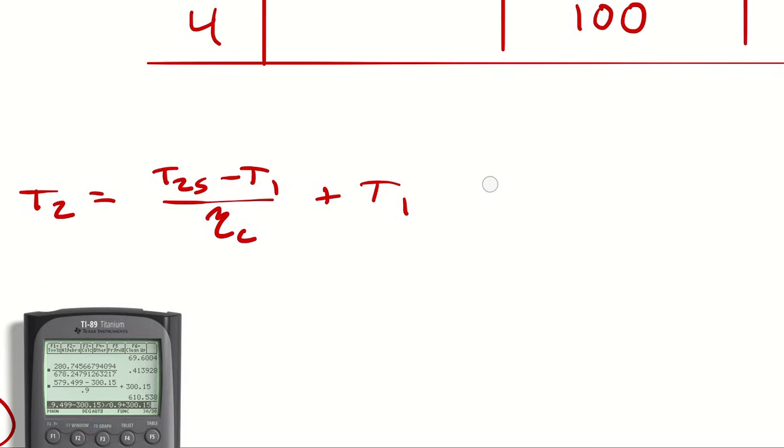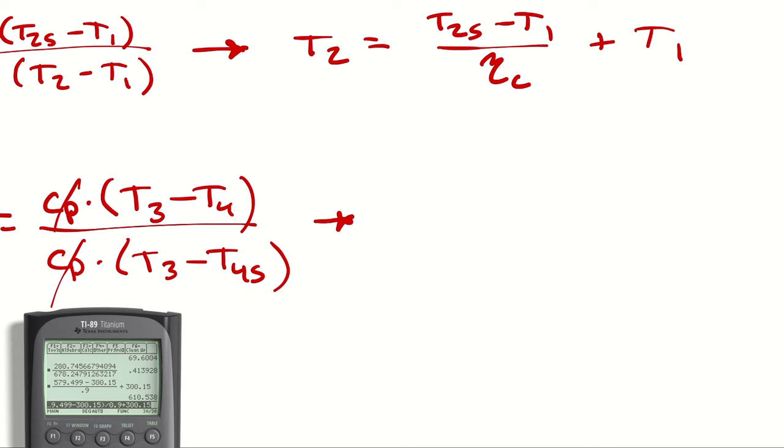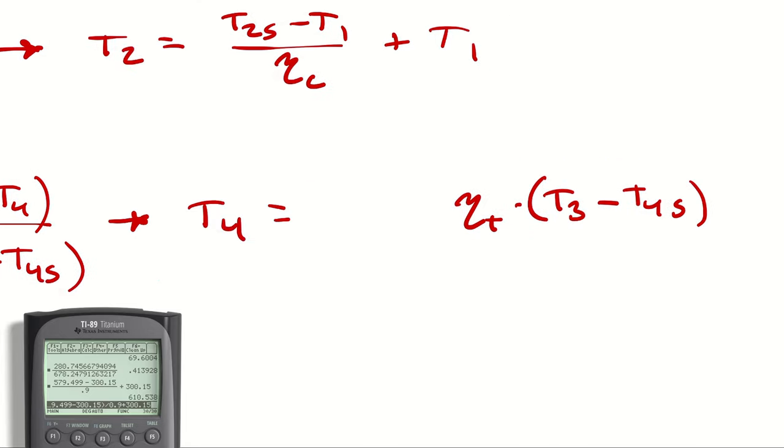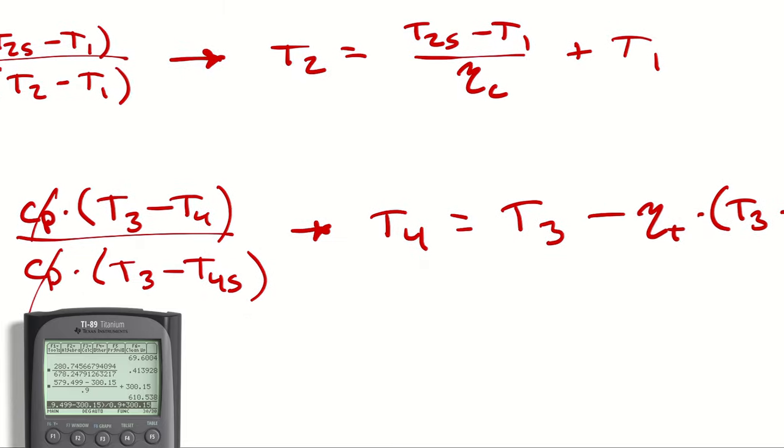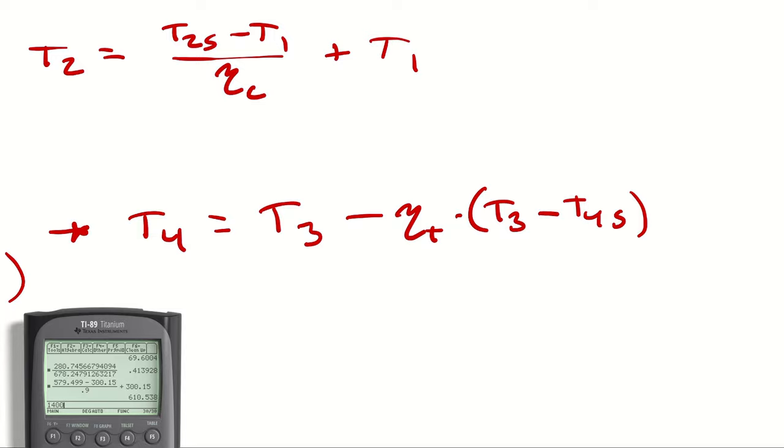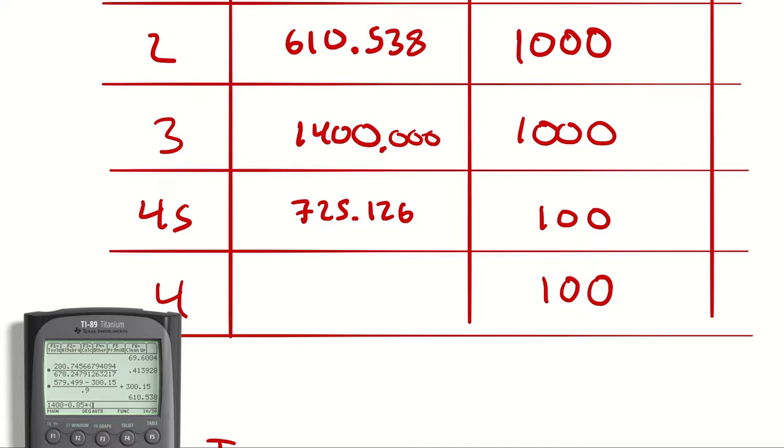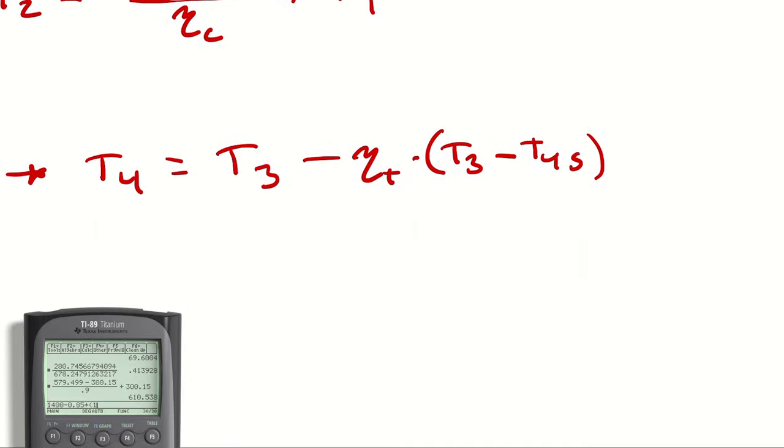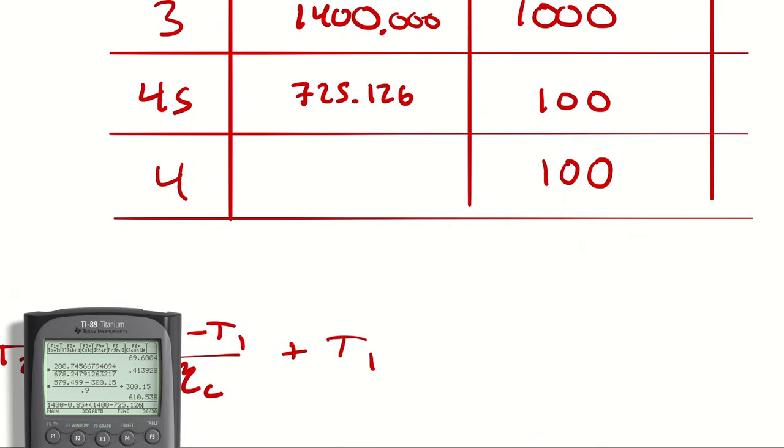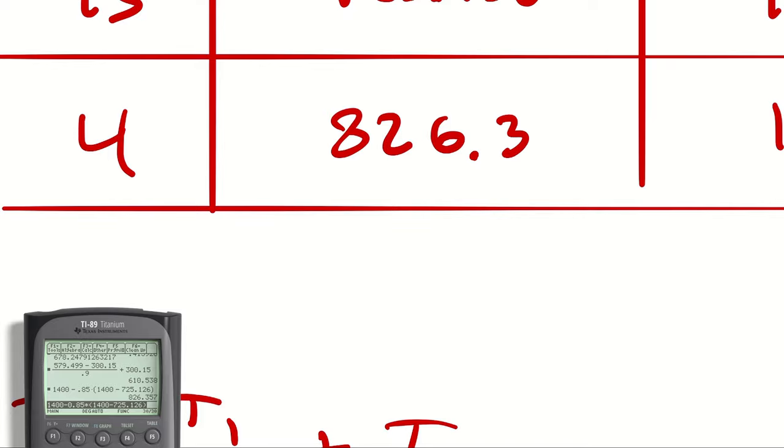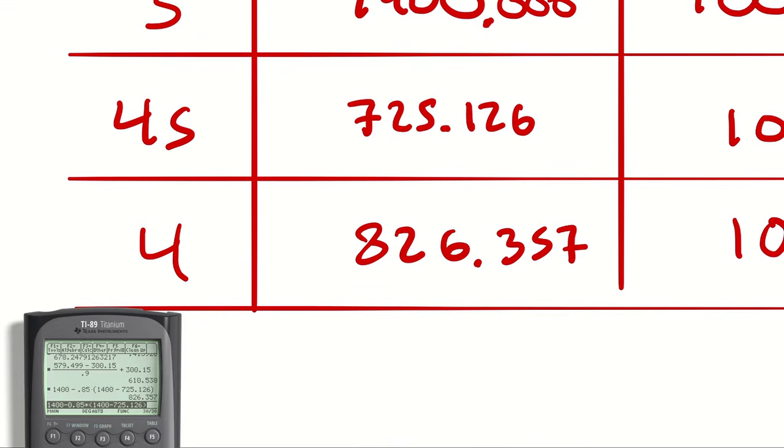And then, I am going to be solving this equation for T4. Again, that concerns everyone. I'm doing algebra. And T3 minus, so boot you to the right. T3 minus. There we go. Yeah. So, 1400 minus the ηT was 85, so 0.85 times T3 minus T4S 1400 minus 725.126 and I get 826. And again, I will sanity check by comparing my 4S to my 4 and asking the question, does it make sense that the temperature increased as the result of friction? Yes, it does.